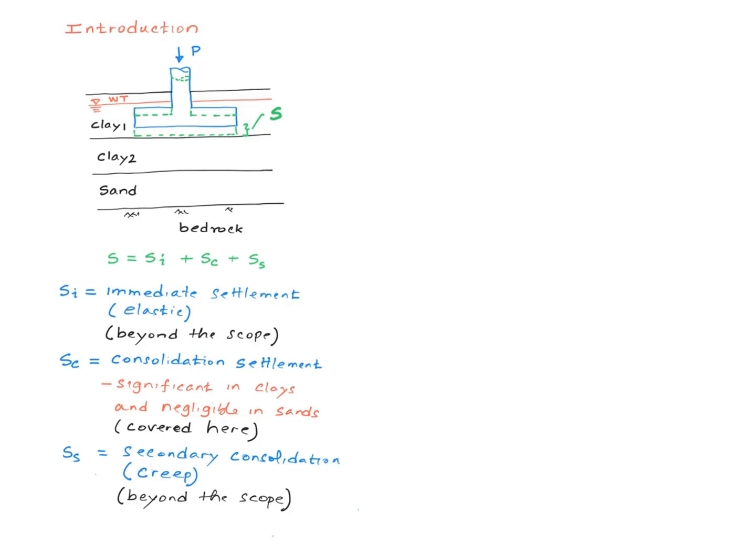There are three types of settlements. Si, the immediate settlement; Sc, the consolidation settlement; and Ss, the secondary consolidation or creep consolidation settlement. Every material experiences an elastic settlement, and this usually happens instantaneously. That's why it's called the immediate settlement. There's going to be a little bit of elastic settlement associated with each layer. The immediate settlement is beyond the scope of this course, and if you are interested, I will refer you to the book which has a fairly good treatment of this.